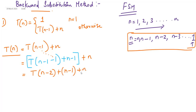So now we have T(n) = T(n-2) + (n-1) + n. Again we substitute T(n-2) backwards. In order to find T(n), we need T(n-1); to find T(n-1), we need T(n-2); and to find T(n-2), we need T(n-3). We keep substituting backwards each time.